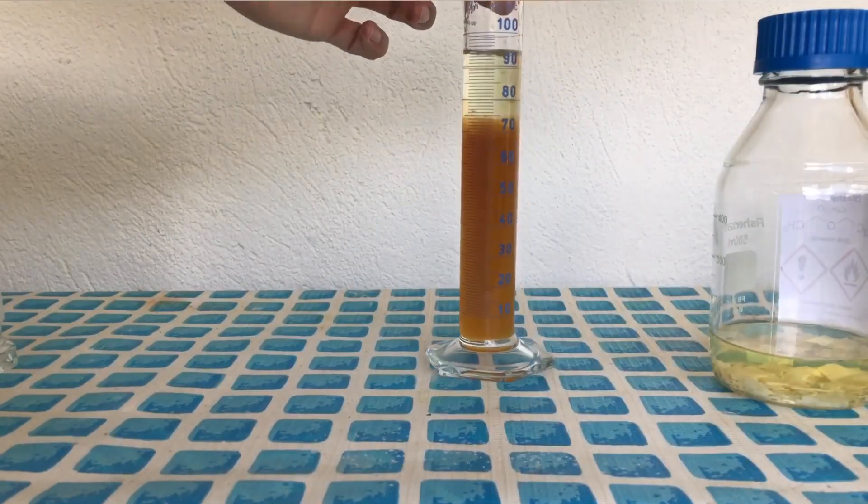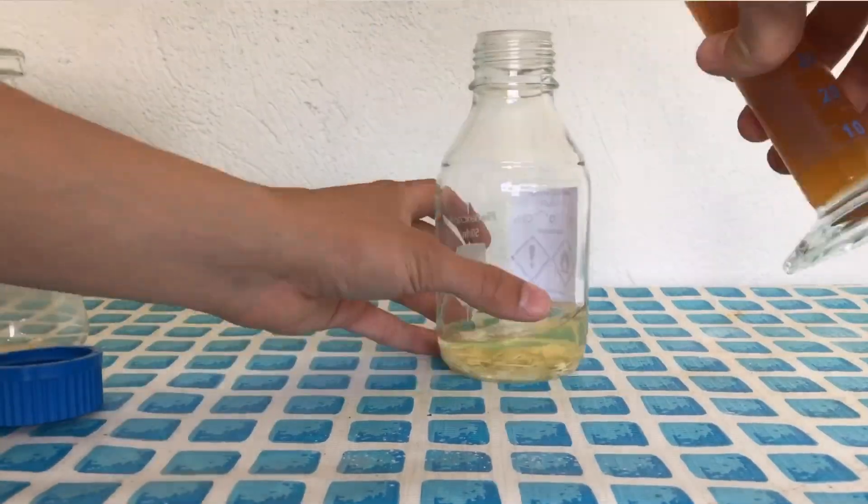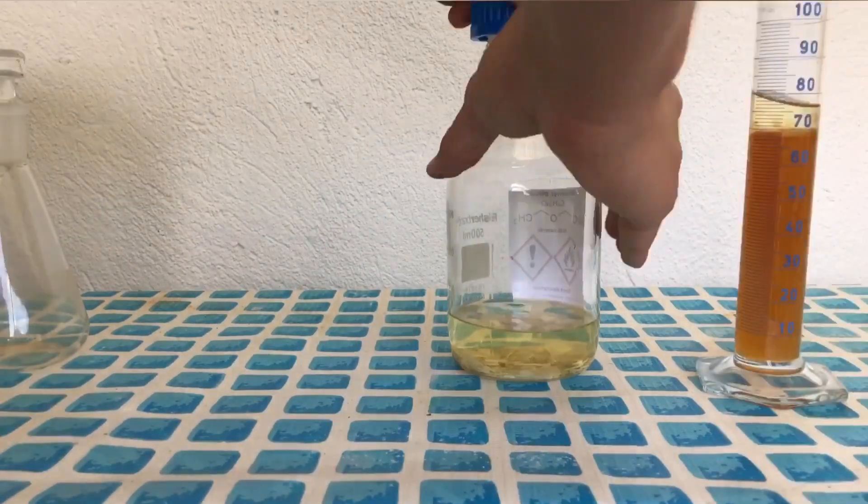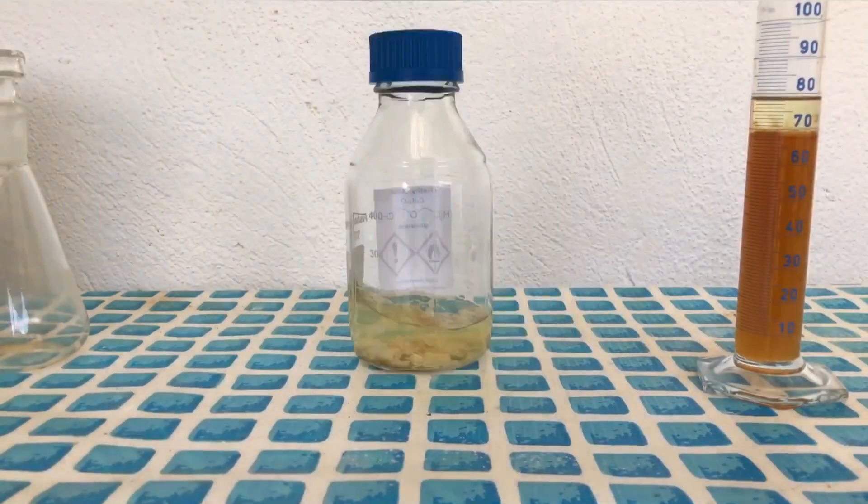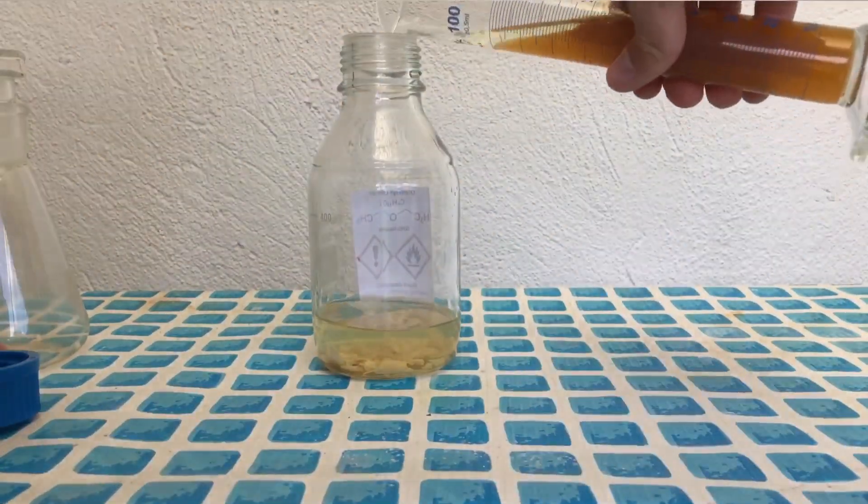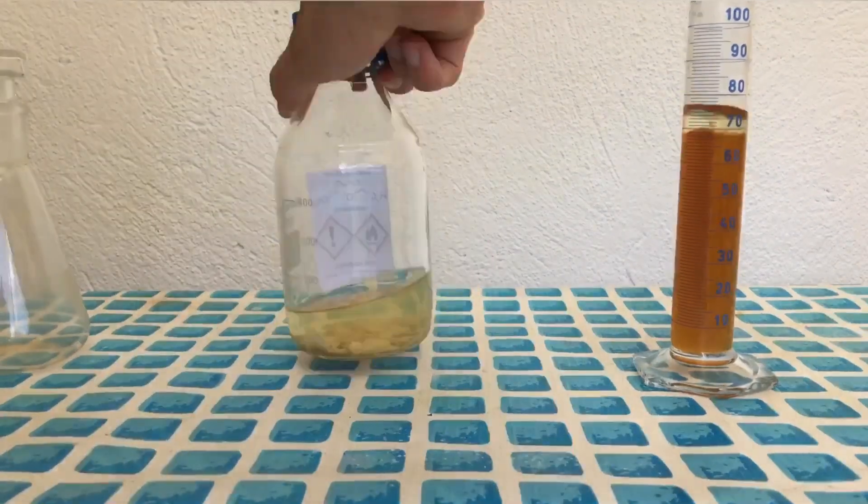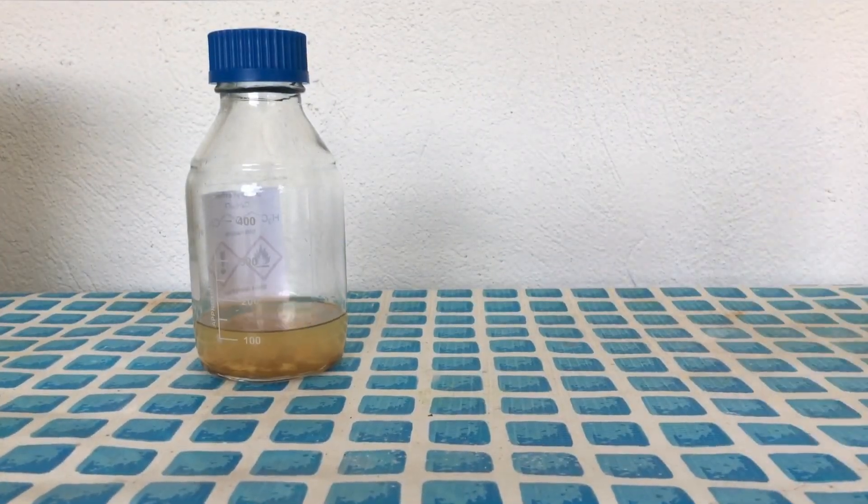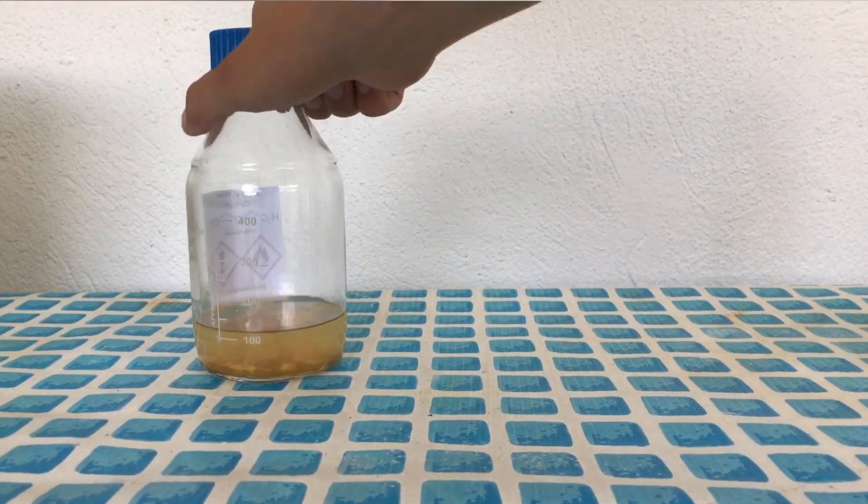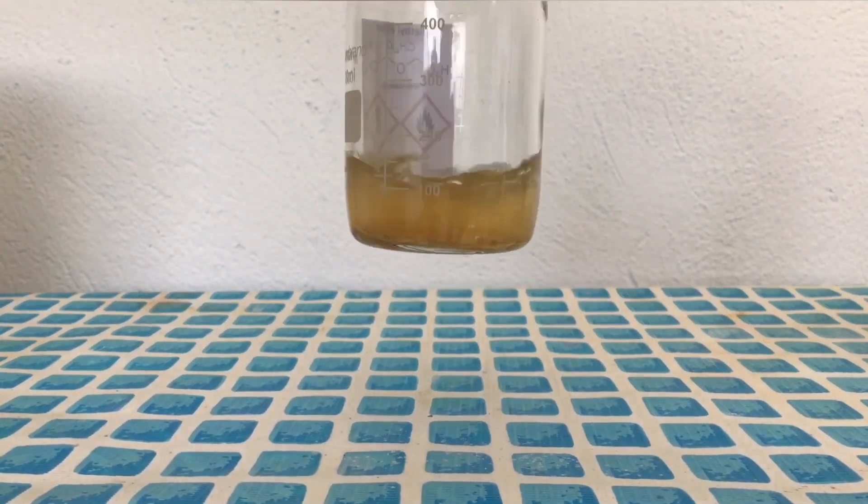The ether still looks a little bit dirty, but I'm not going to purify it any further and I'm not going to test it for peroxides. We should have removed most of the peroxides, but why am I still not testing it? Well, I will neither use it for any reactions, nor for any extractions, and therefore it won't be distilled and peroxides won't be any problem.